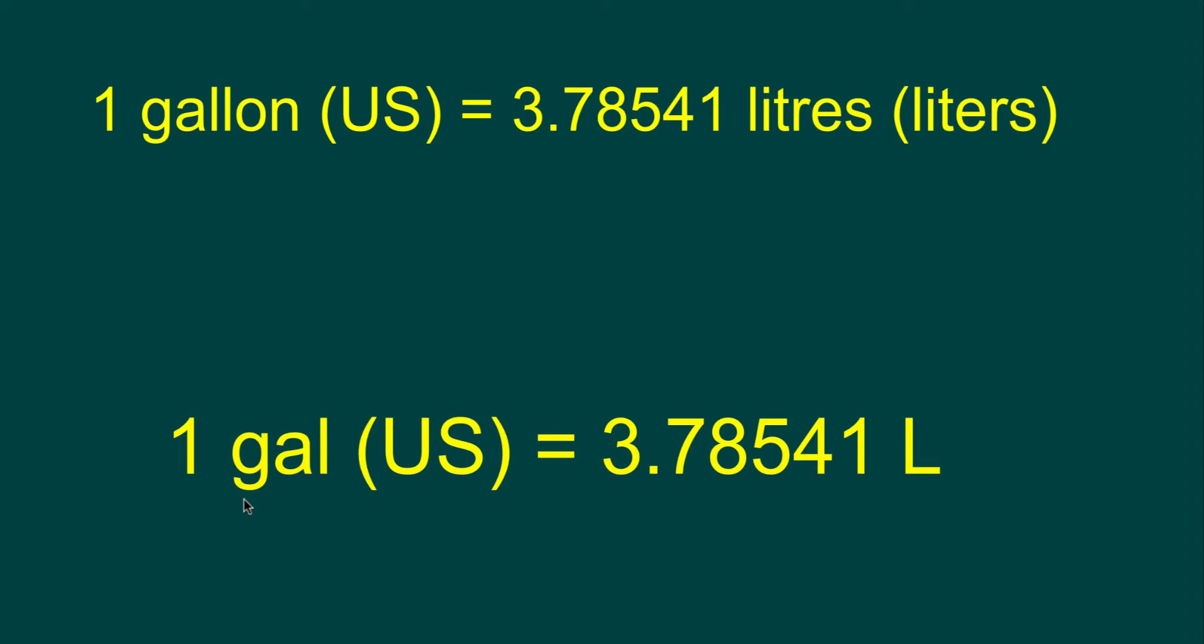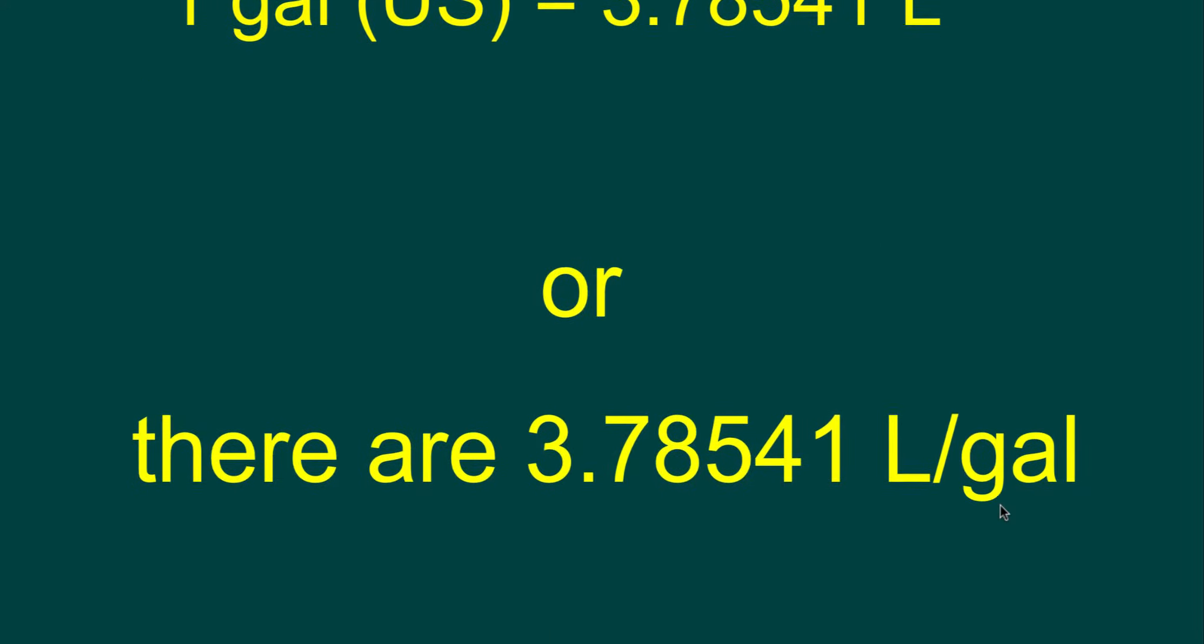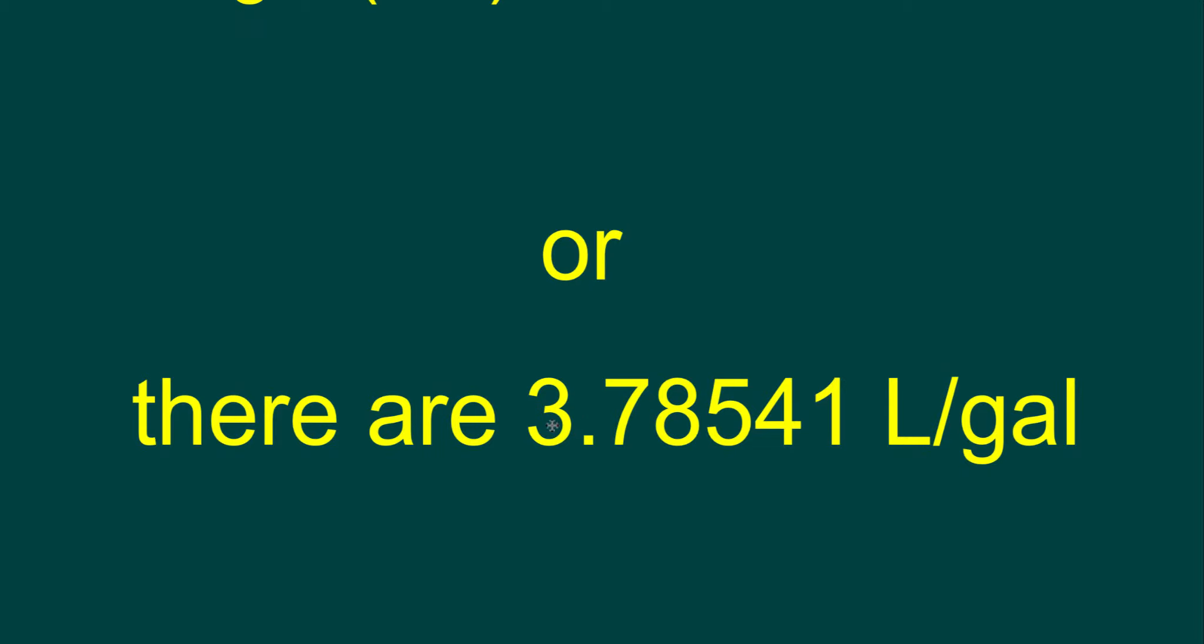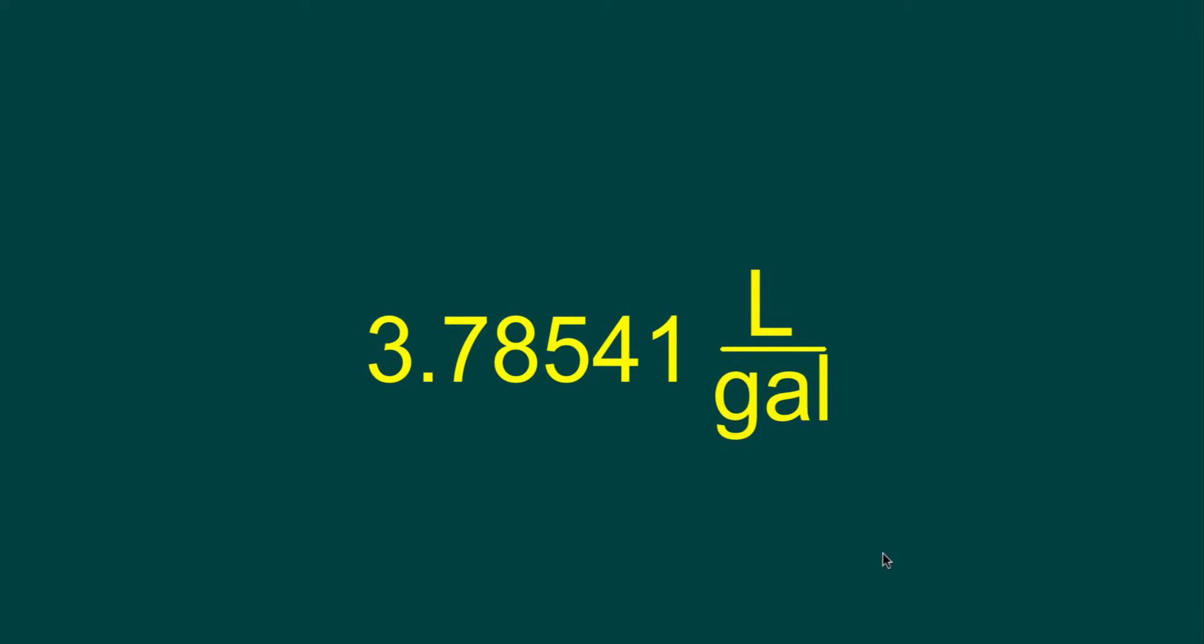Or with the symbols, one gal U.S. is equal to 3.78541, and the symbol for liters is L. Or we could say that there are 3.78541 liters per gallon, which can also be written in this form. So, 3.78541 liters for every gallon. That is the conversion factor.